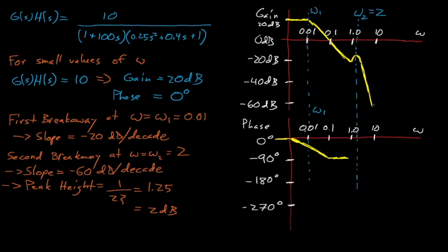The phase shifts from negative 90 degrees to negative 270 degrees after omega 2. And the shift starts at omega 2 divided by 5 to the power of squiggle and ends at omega 2 times 5 to the squiggle. 5 to the squiggle is about equal to 2, which means that this phase transition starts at a frequency of 1 and ends at a frequency of 4.